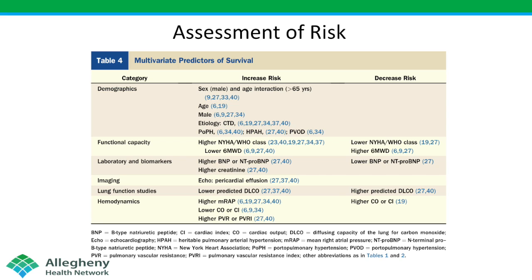This next slide demonstrates the predictability of these various factors, as discovered in registries that examined the longevity of patients with pulmonary hypertension. A variety of demographics, assessments of functional capacity, labs, imaging, and lung studies have all been validated as being able to predict risk in patients with pulmonary arterial hypertension.